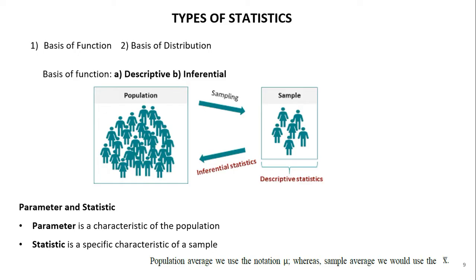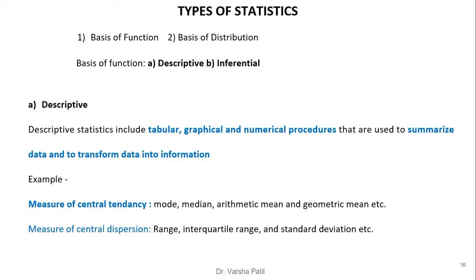Two important keywords are parameter and statistic. A parameter is always associated with the population, while a statistic is associated with the sample. For example, when we refer to the average for the population, it is denoted by mu (μ), and for the sample it is x-bar.